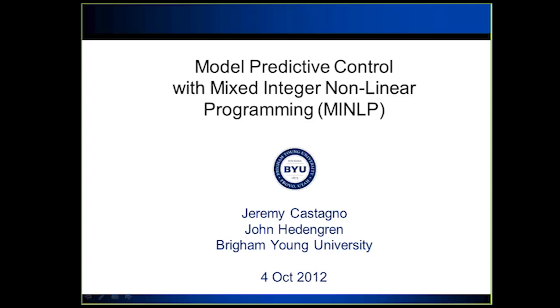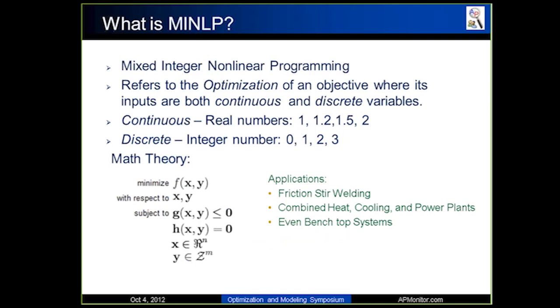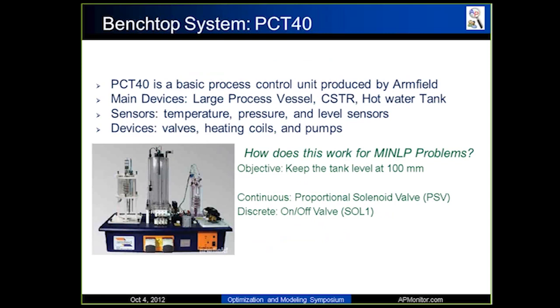Most of you already know what mixed-integer denominator programming is. I'm just going to go through this real fast, but it's this idea where you have both continuous and discrete variables and you're trying to optimize an objective function that uses these variables. And so the test is this idea of real-time optimization for mixed-integer denominator programming. We're using a benchtop system called a PCT40.